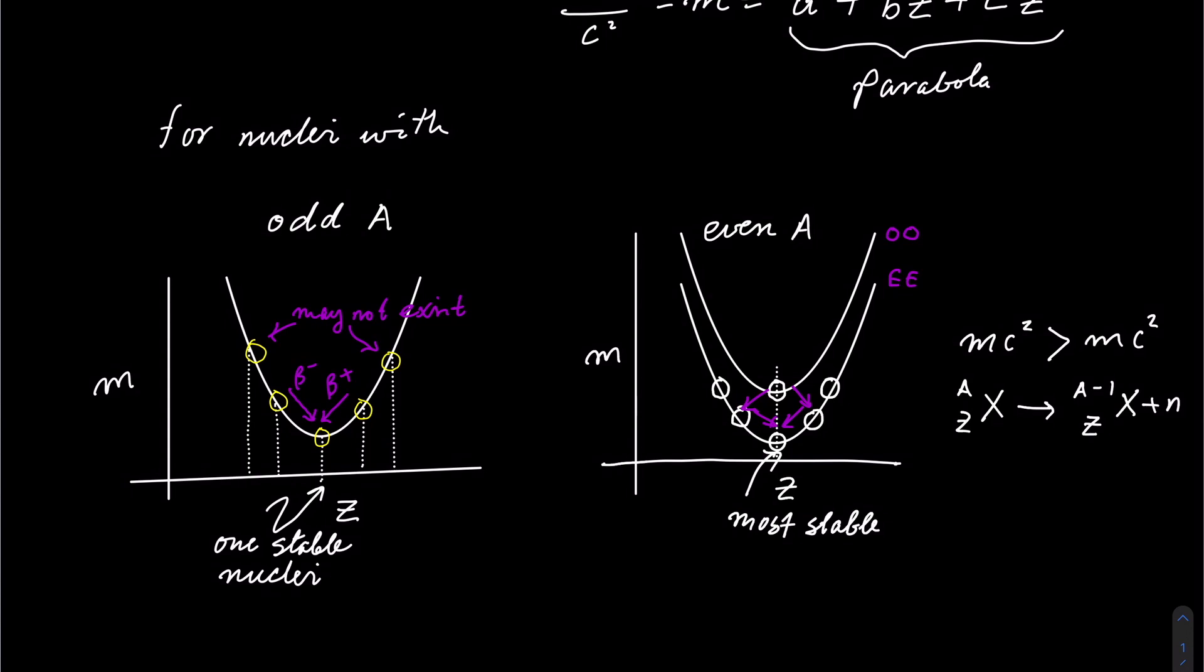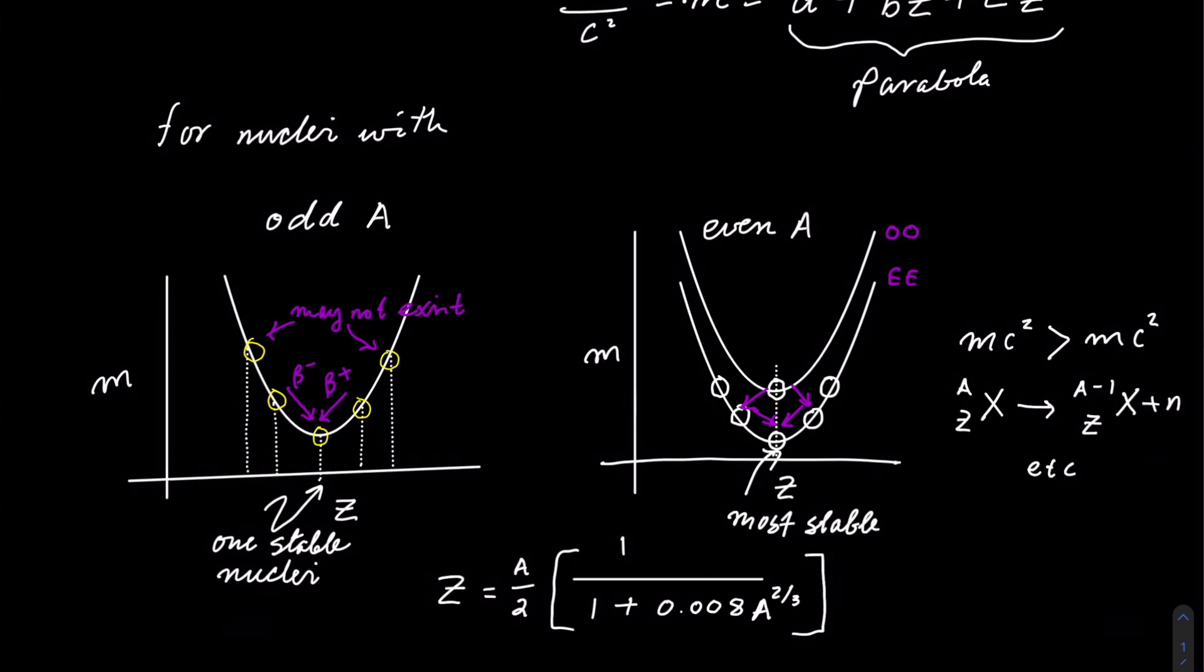You can find the number of protons that can sustain the stability of a nucleus using this equation: Z equal to A over 2 multiplied by 1 over 1 plus 0.008 and the square of the cube root of the nucleus.